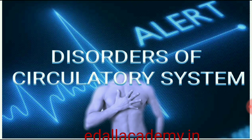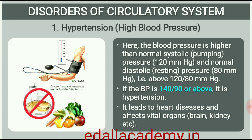18.6 Disorders of Circulatory System. High blood pressure, or hypertension, is the term for blood pressure that is higher than normal 120/80. In this measurement 120 mmHg is the systolic, or pumping, pressure and 80 mmHg is the diastolic, or resting, pressure. If repeated checks of blood pressure of an individual is 140 over 90 or higher, it shows hypertension. High blood pressure leads to heart diseases and also affects vital organs like brain and kidney.